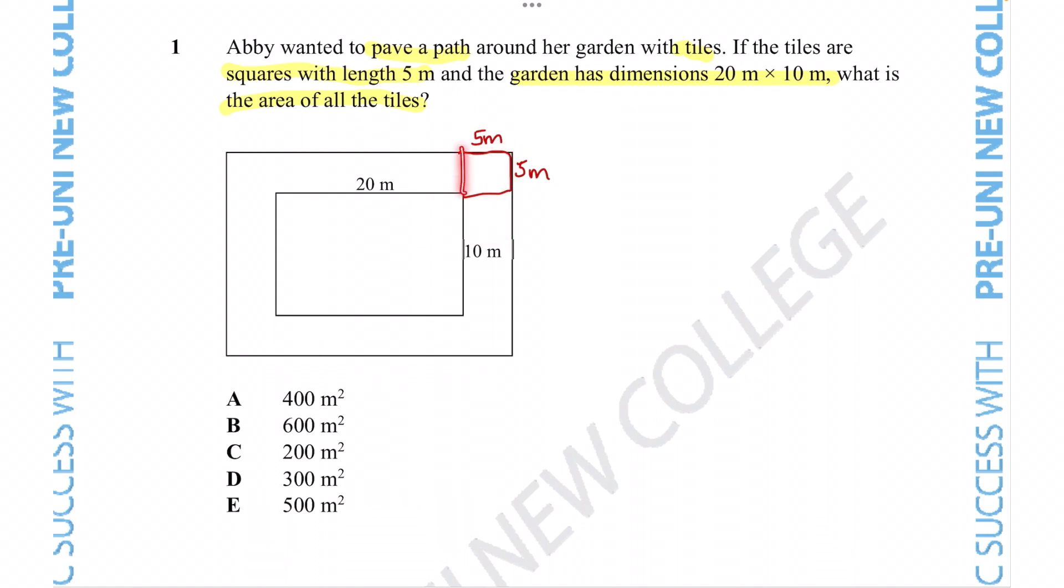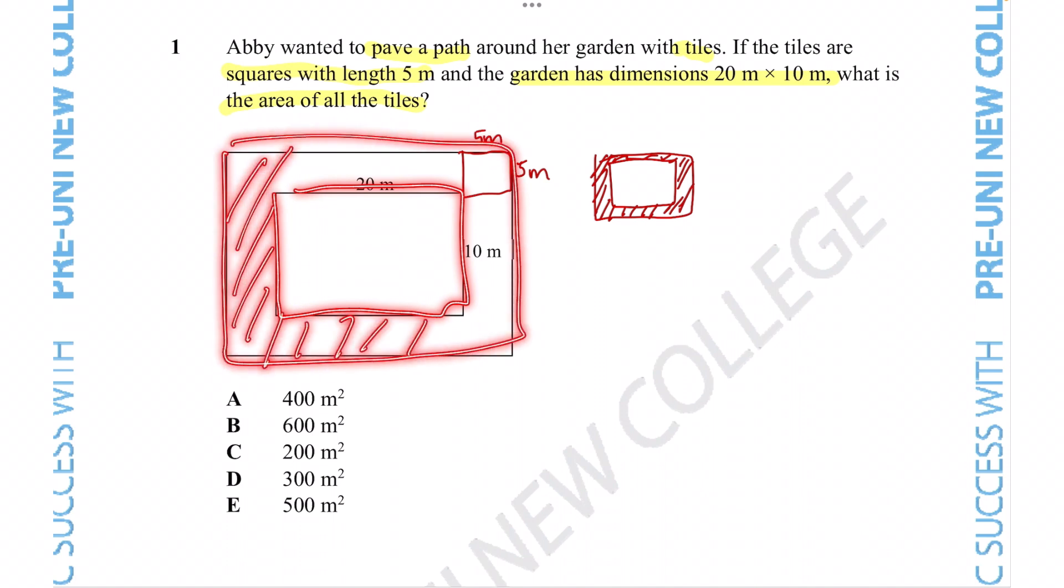So if these tiles are going to consist the area of her path, then we need to figure out how to figure out that area. And we can kind of see that even if it is kind of like a ring shape, it's essentially composed of a composite shape. You've got two rectangles, you've got the big area of the rectangle of the pathway and the garden, and you've got the area of the garden itself. So if you take away the area of the garden from this larger area, then all you're left with is the garden path tile, which is exactly how we're going to answer this question.